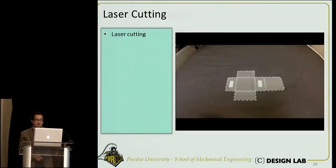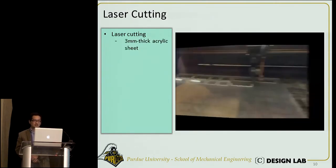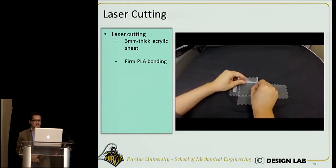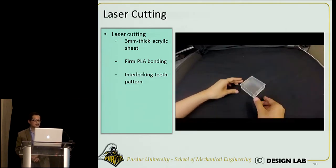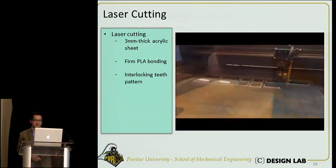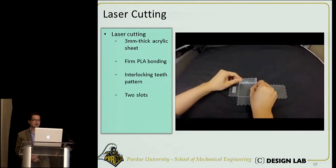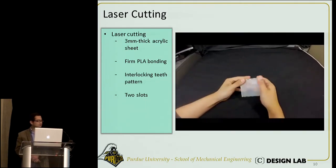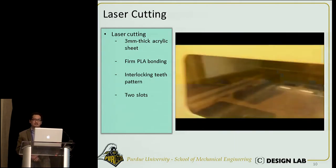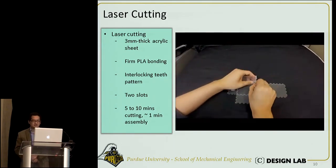After computing the cuboid, we laser-cut it. We select a 3mm acrylic sheet as the material because it can be bonded with PLA firmly. We put interlocking teeth patterns along the edges of the cuboid to ensure the six facets can be pressed together firmly. We also put two slots onto two opposite facets to secure the cuboid during printing, and these slots can also be used for calibration.